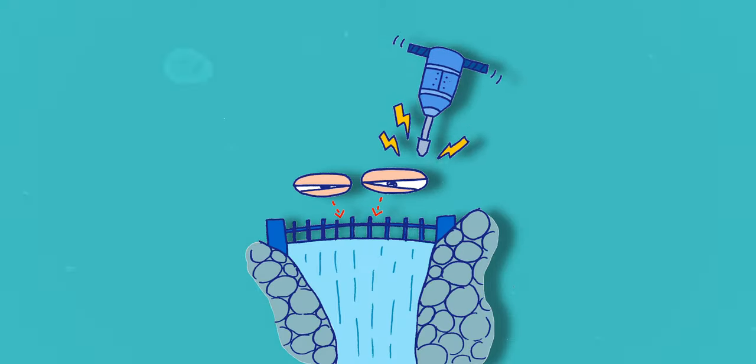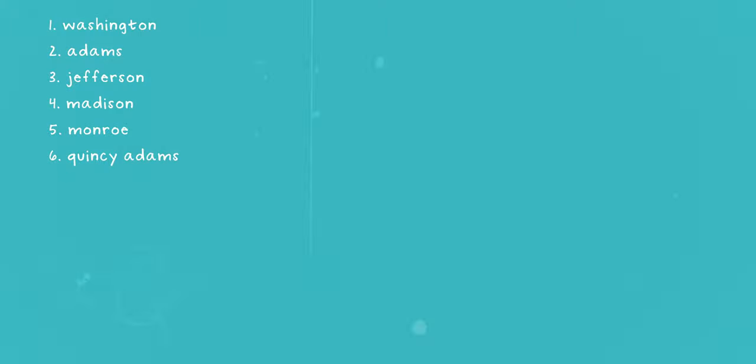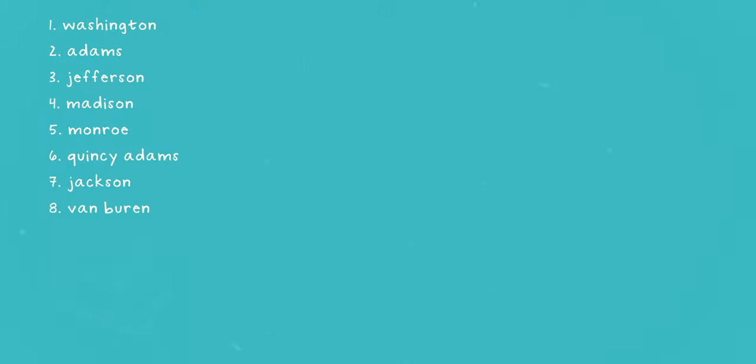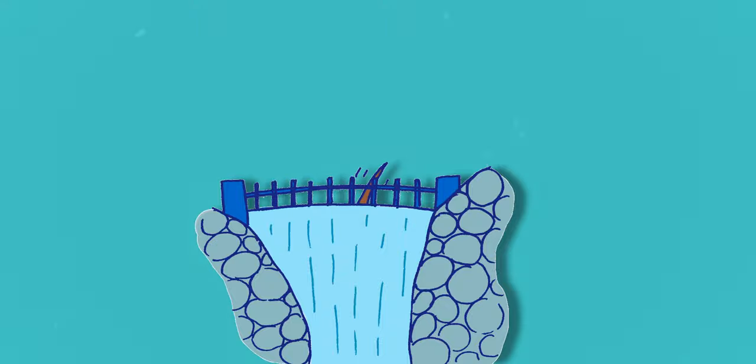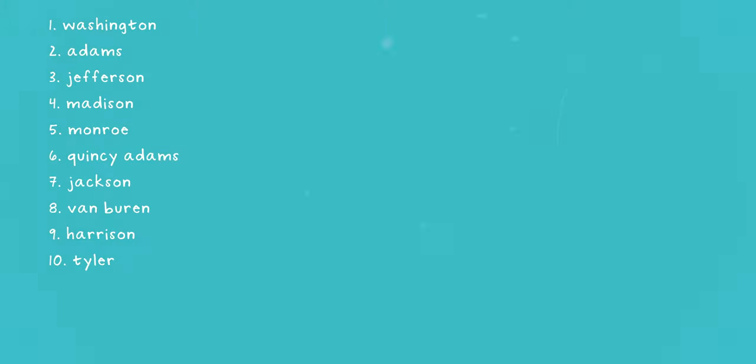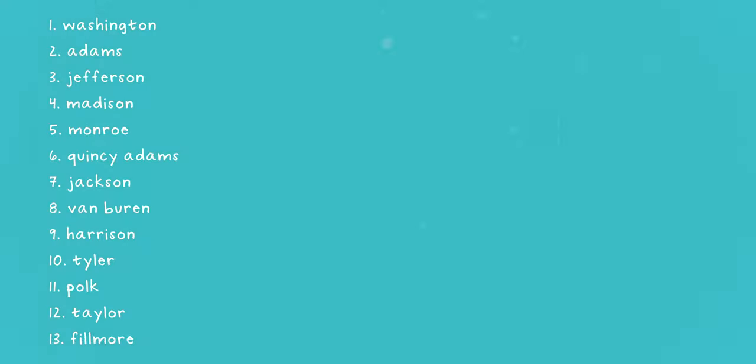The jackhammer is Jackson. Then the van burning — van burning is Van Buren. The driver is a hairy son — that's Harrison. He's wearing a necktie, so that's Tyler. Inside the dam, there's something poking out — that's 'poke,' and it's a tail, so that's Taylor. There's a filmer filming the whole thing — filmer is Fillmore.